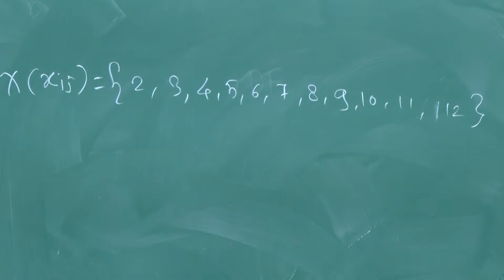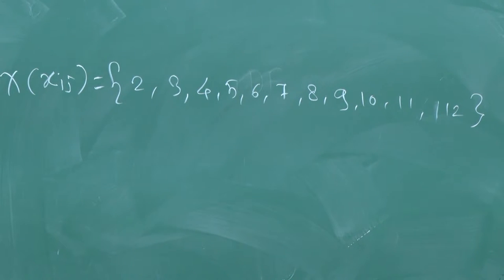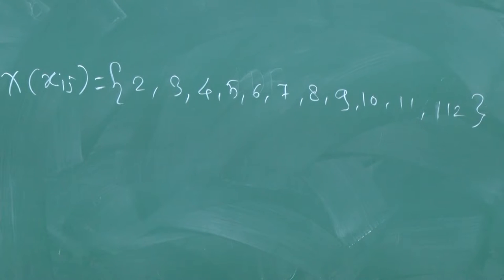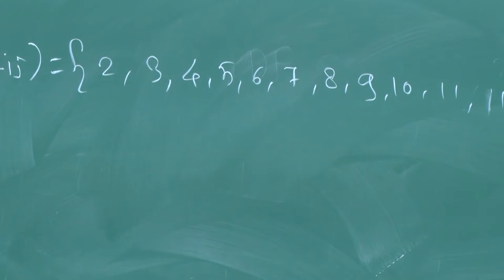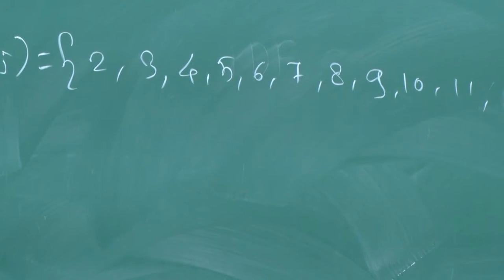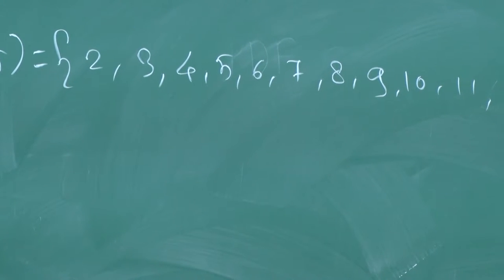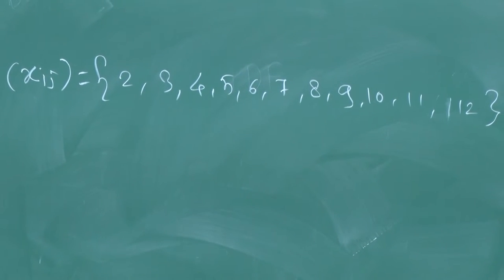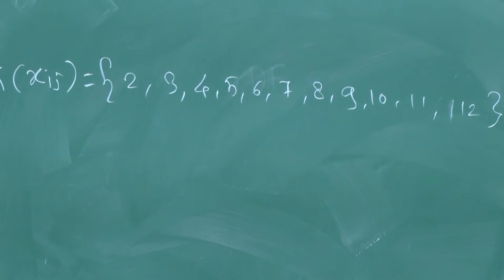These are the values of your random variable for this experiment. Then find out the probabilities. Probability of 2 is 1/36 (only 1+1). Probability of 1 is 0. Probability of 12 is 1/36. Then probability of 3 and probability of 11 is 2/36. Probability of 4 and probability of 10 is 3/36. Probability of 5 and 9 is 4/36. Probability of 6 and 8 is 5/36. Probability of 7 is 6/36.